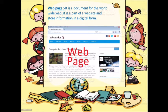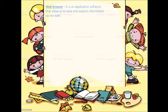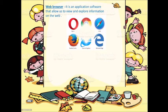Next is web browser. What is a web browser? It is an application software that allows us to view, access, explore, and retrieve information on the web. You can see pictures of different types of web browsers like Opera, Google Chrome, Safari, Mozilla, Filebox, and Internet Explorer.